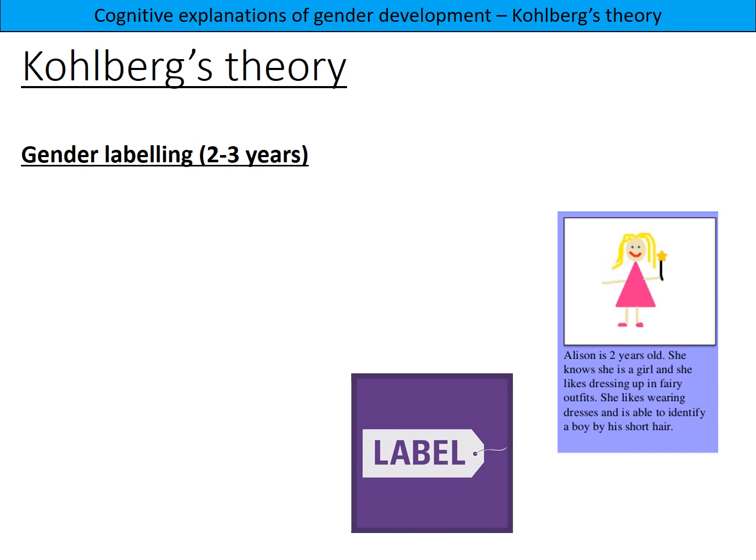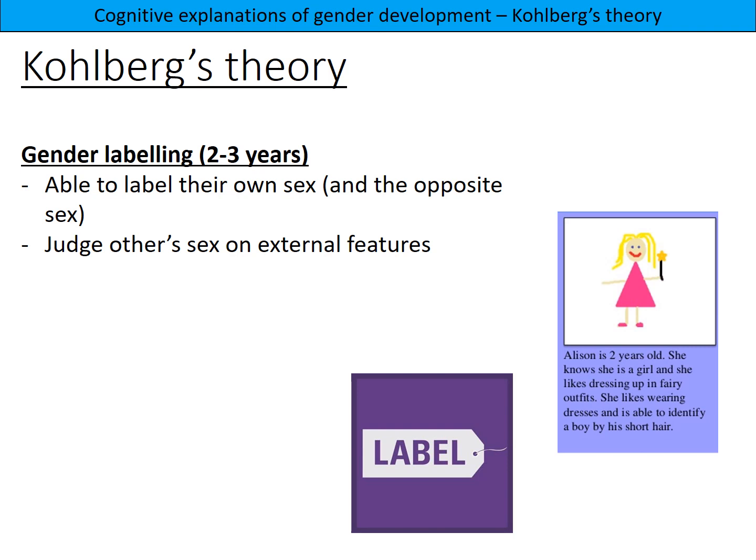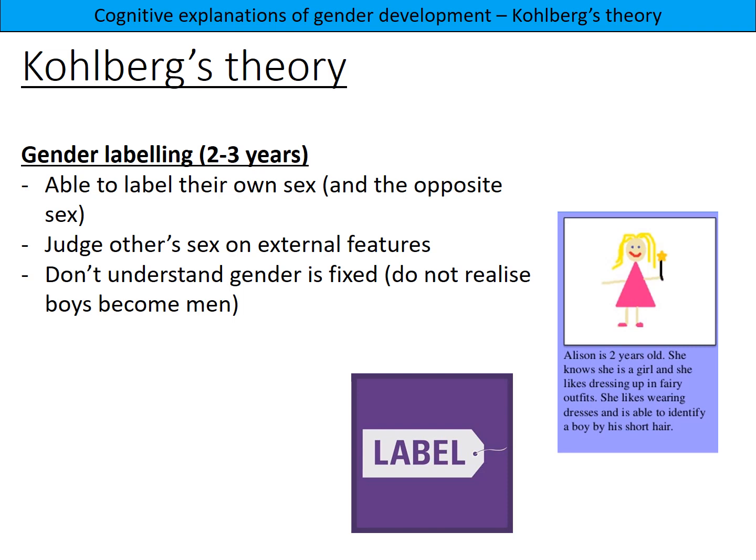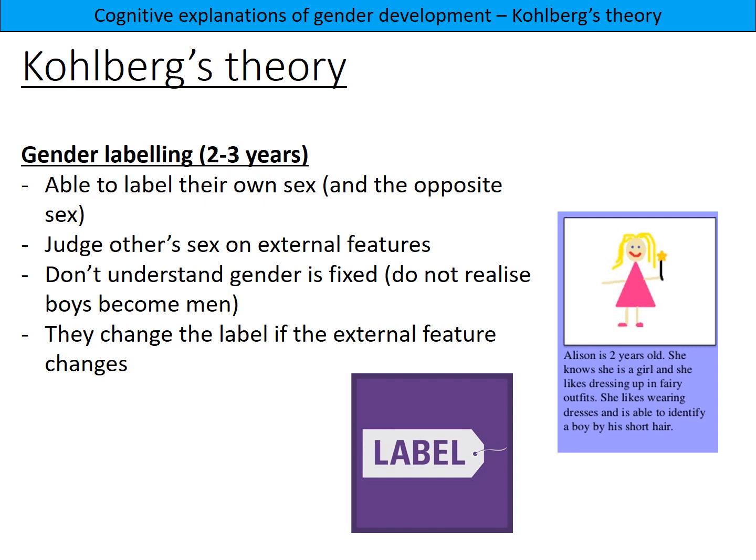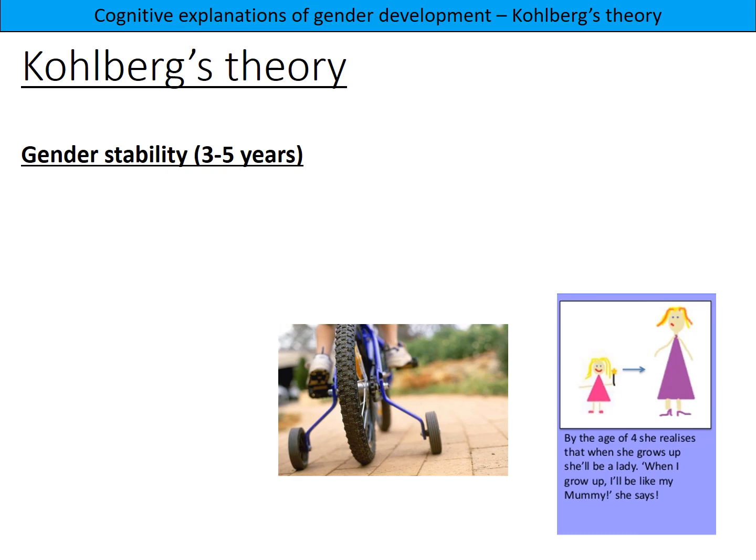Gender labeling, at two to three years old: children are able to label their own sex and the opposite sex, and they judge sex based on external features such as clothing or hair length. They don't understand that gender is fixed, so they don't realize that boys become men. For example, Allison is two years old — she knows she is a girl, likes dressing in fairy outfits, and identifies a boy by his short hair.